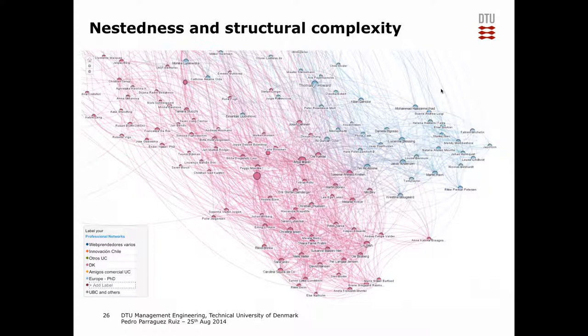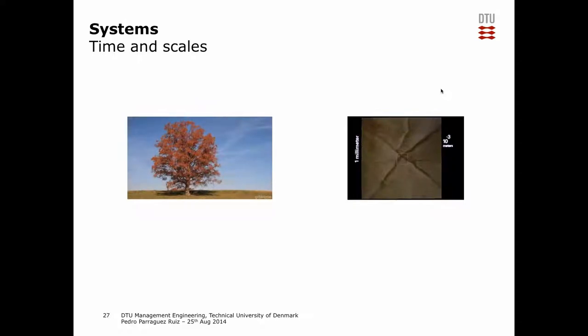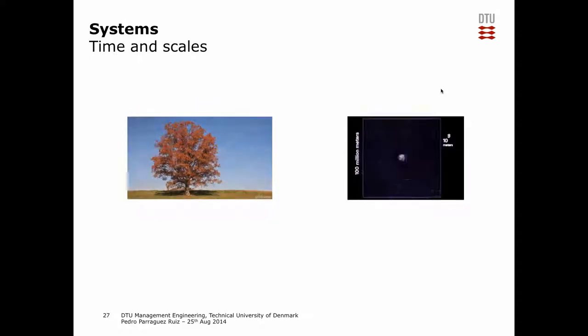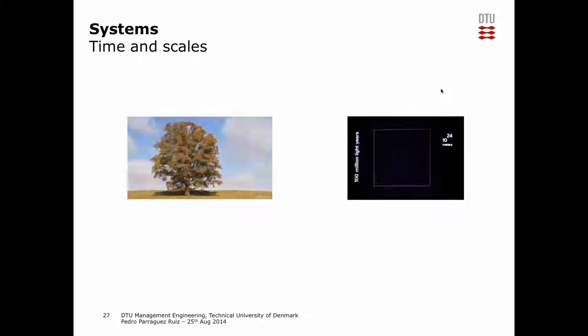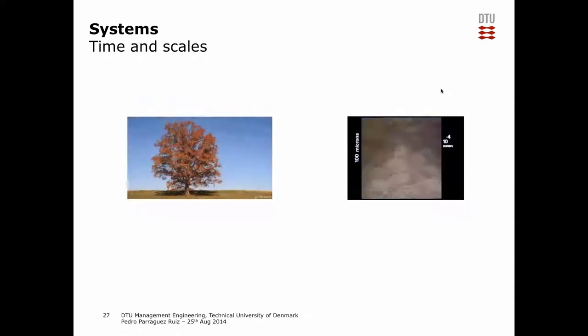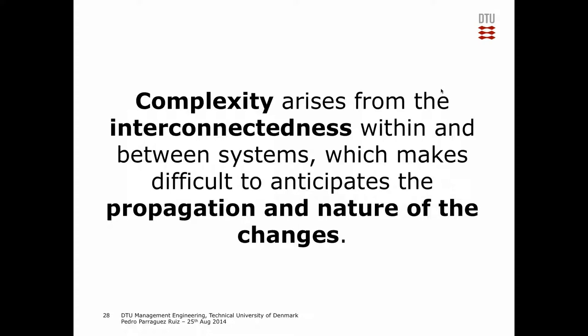One driver of complexity is time scales — it's not the same when we see one snapshot versus the whole picture. Scales also matter — different scales reveal different things. Complexity arises from interconnectedness within and between systems and subsystems, making it difficult to anticipate the nature and propagation of change. In 1979, Rosne proposed something interesting: after World War II, we were stuck with only the microscope view or the telescope view.